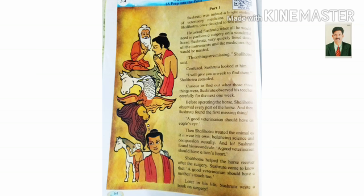Then Shalihotra treated the animal as if it were his own, balancing science and compassion equally. Sushruta found his second rule: a good veterinarian should have a lion's heart — a big heart should be there.